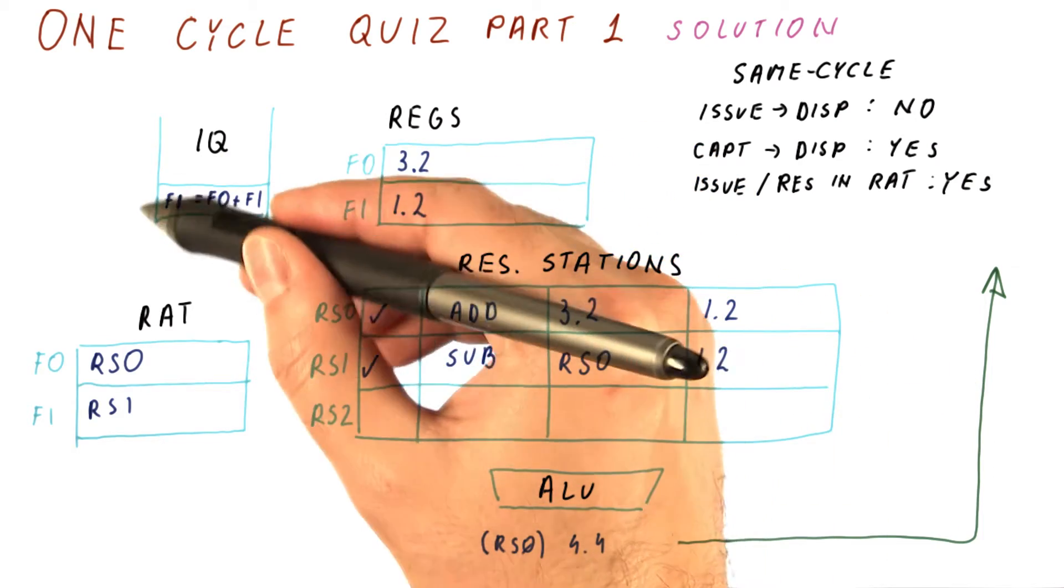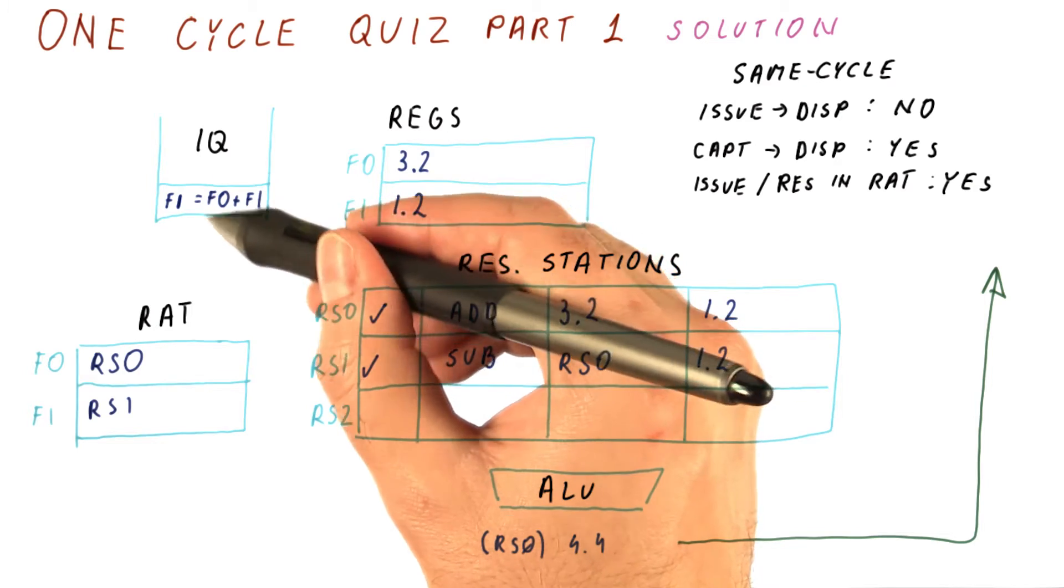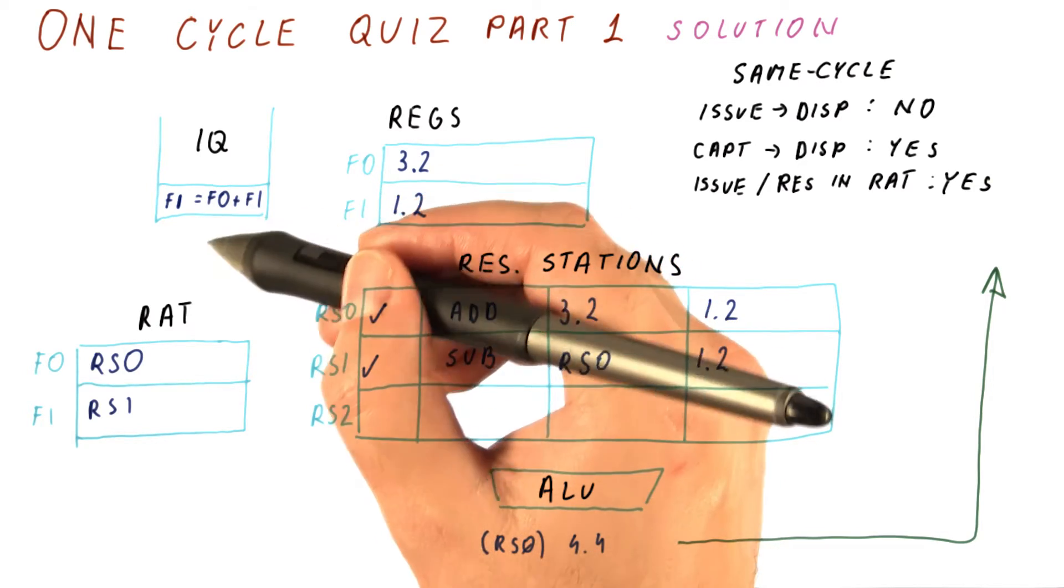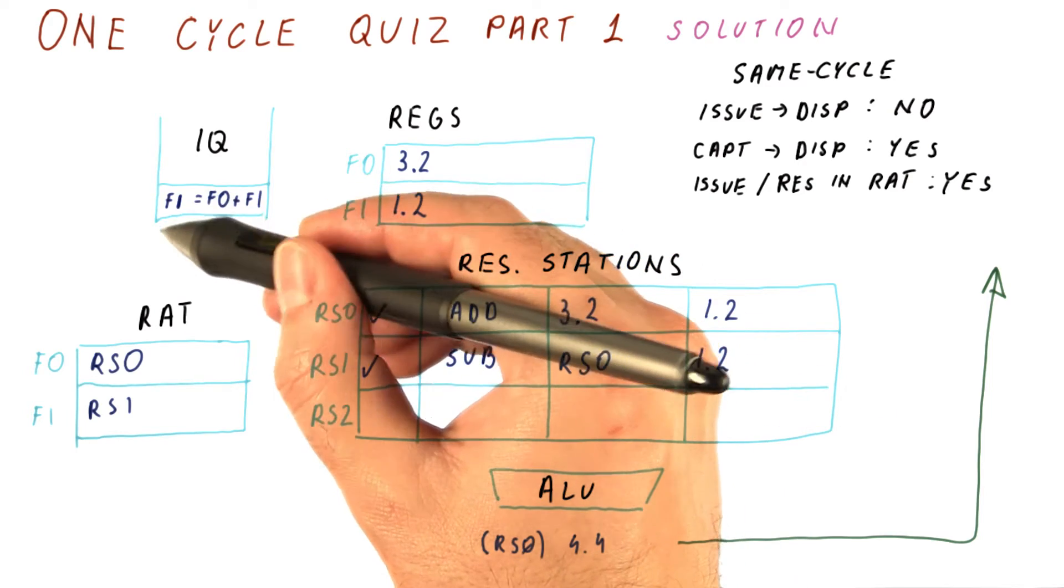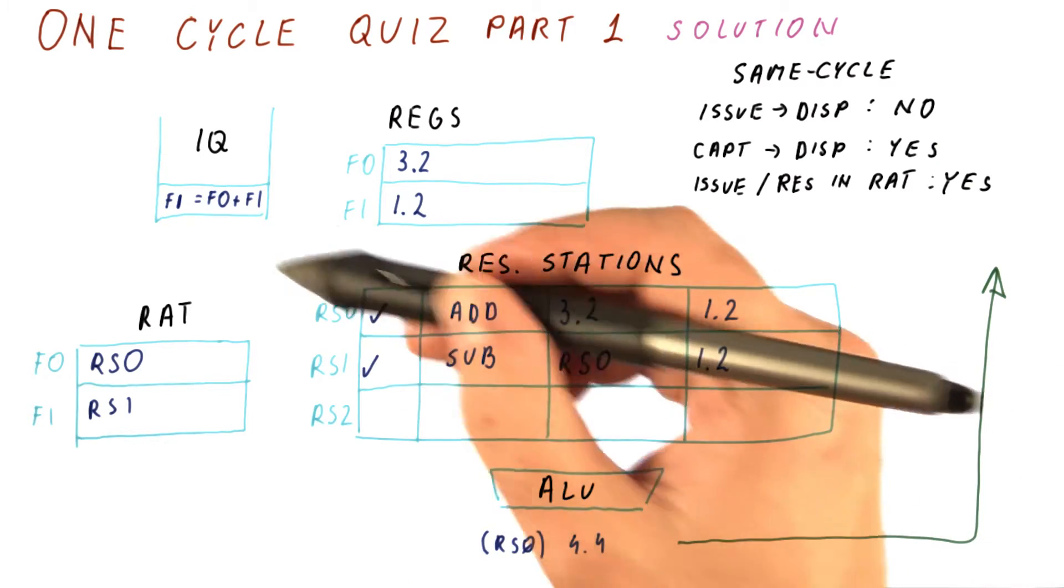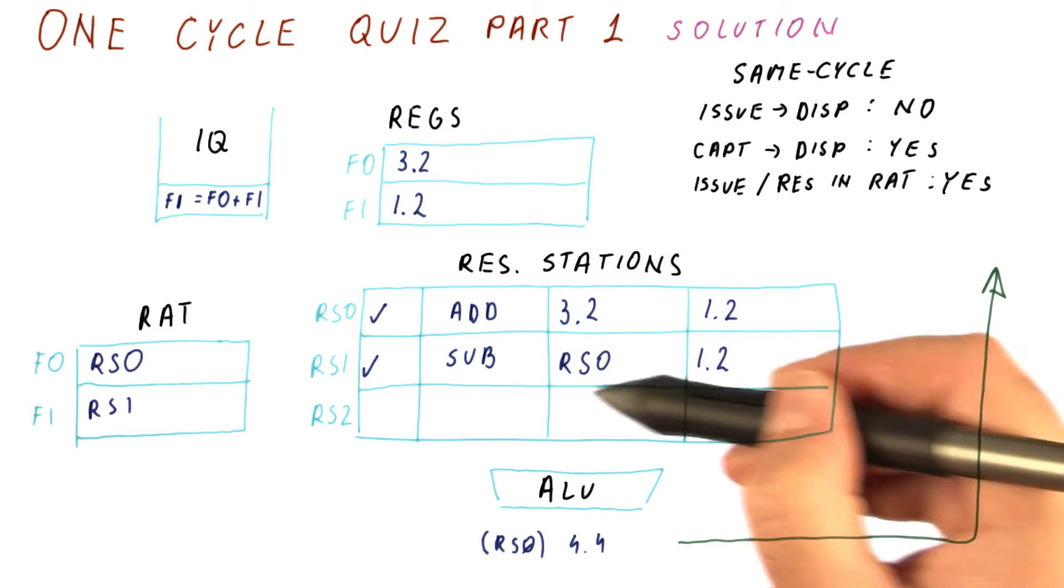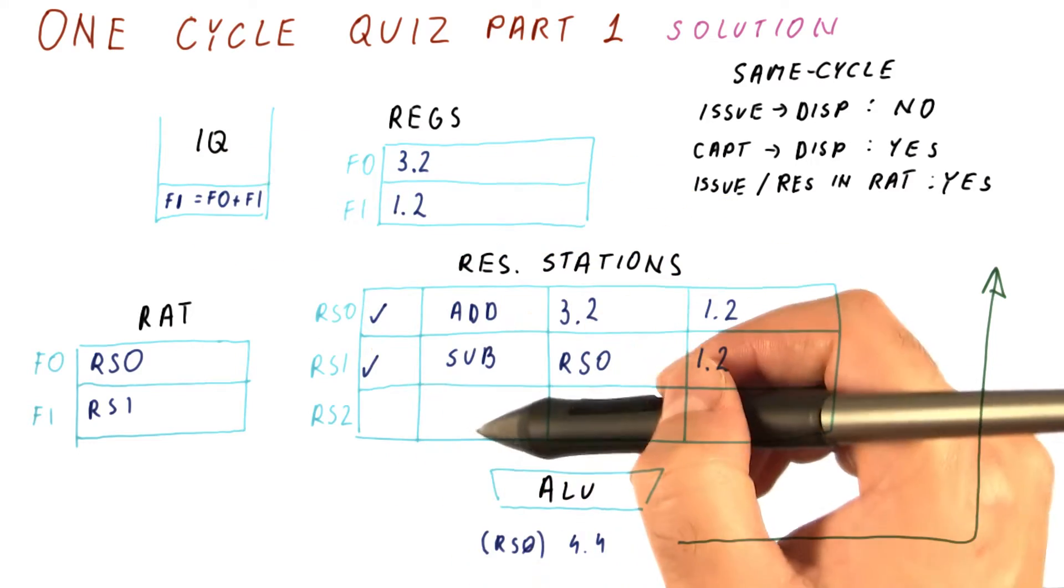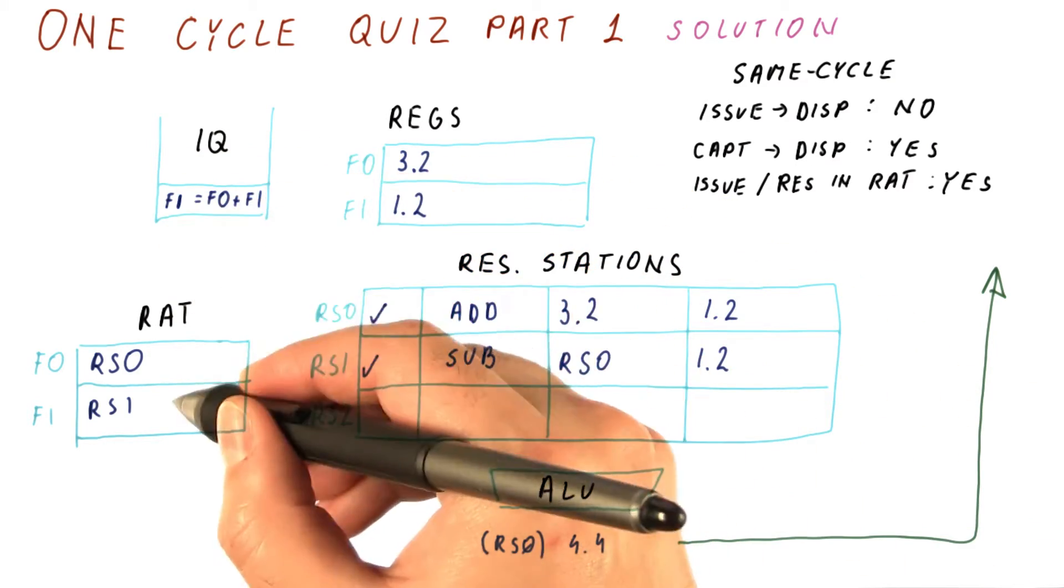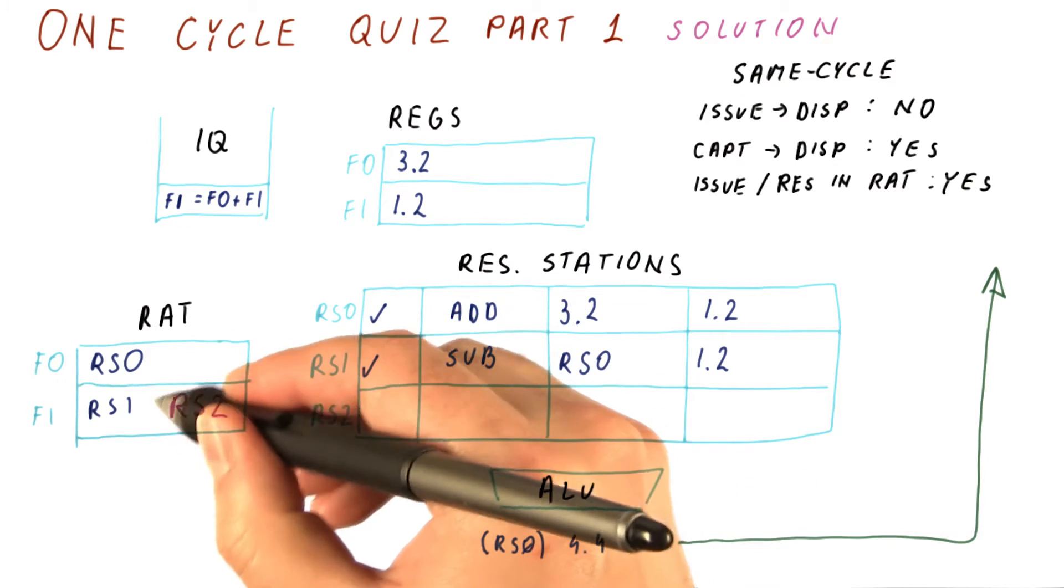So let's see. Issuing this instruction results in looking at the RAT entries for F0 and F1, and then writing to the entry for F1 the number of the reservation station where we put this instruction. Because there is an available reservation station, this instruction will issue there, so the entry for F1 will be changed to point to our reservation station 2.